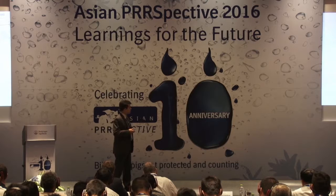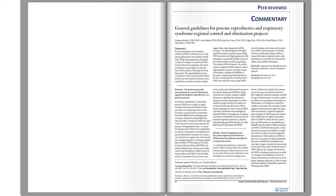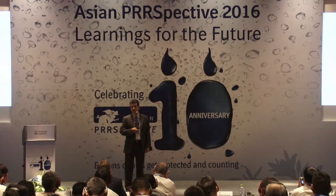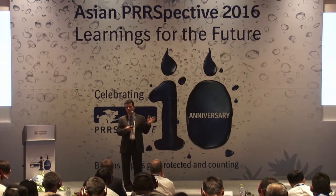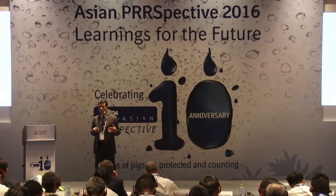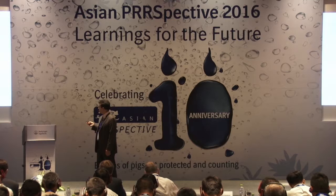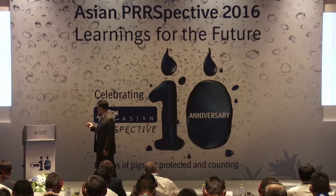With all the experiences gathered from different regional control projects, we at BI produced guidelines in 2014. This document was published in the Journal of the American Association of Swine Veterinarians in 2012 and 2014. These are general guidelines of how to conduct a project of regional control, for people who wanted to start doing something to control PERS in a given area.